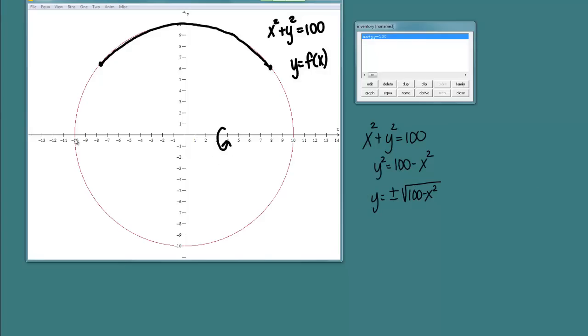Now, the plus, Y equals positive square root of 100 minus X squared actually represents the top half of the circle, where the Y values are positive. And Y equals negative root 100 minus X squared is the bottom half of the circle.